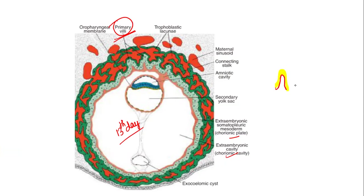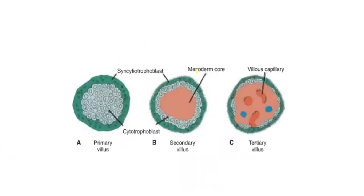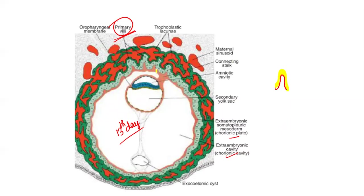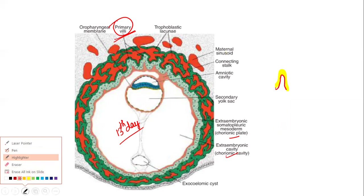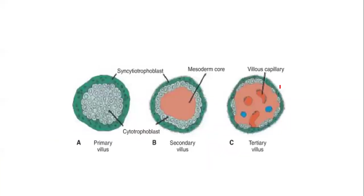The villi — these finger-like projections — have three stages of development. The first stage is primary villi, which happens on the 13th day. Subsequently you get secondary and tertiary villi. Primary villi consists of cytotrophoblastic cells surrounded by syncytiotrophoblast. When mesodermal cells invade the primary villi, it becomes secondary villi. When blood vessels are added to secondary villi, it becomes tertiary villi.